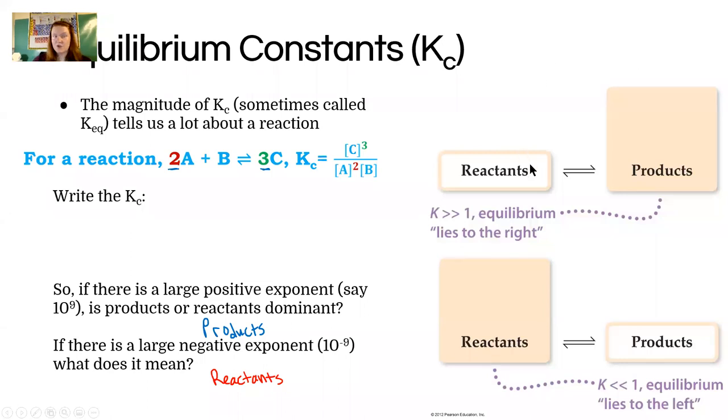So some of us are a more visual type of learner. And this image from your textbook is a really, really good summary. If K is really big, so much bigger than 1, we have a very small amount of reactants, because they're on the bottom, and a very large amount of products. If, on the other hand, K is way smaller than 1, so 10 to the negative 9 is an example of that, it means you've got mostly reactants and very little product.